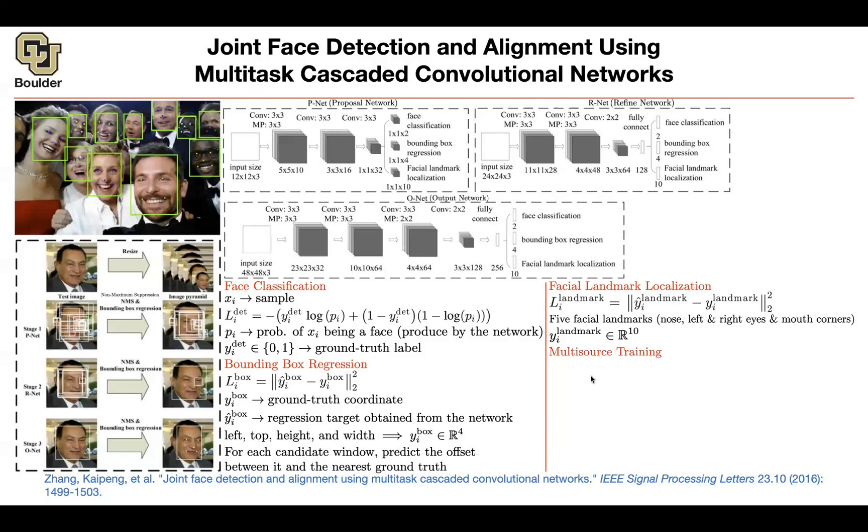You have a multi-objective optimization problem here. You have different heads. How do you balance them? You're going to balance them using coefficients. How many losses do you have? Three losses corresponding to detection, bounding box regression, and landmarks.